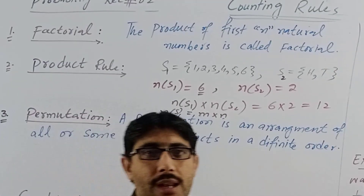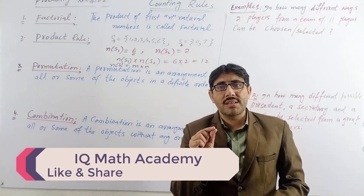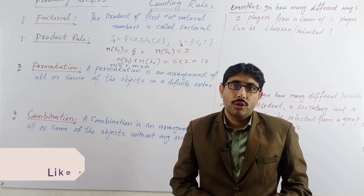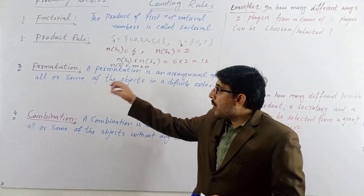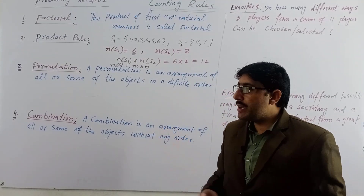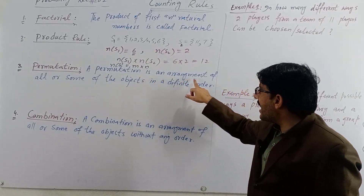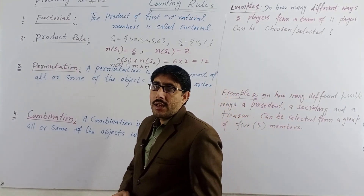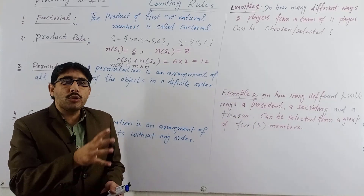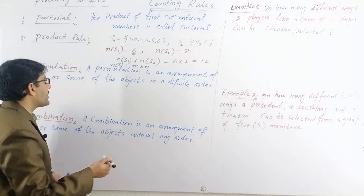Now let us discuss permutation and combination. Students often get confused between these two. The only difference is one concept: permutation is also an arrangement, and combination is also an arrangement, but in permutation, order matters, while in combination, order does not matter. Permutation is an arrangement of all or some of the objects in a definite order.